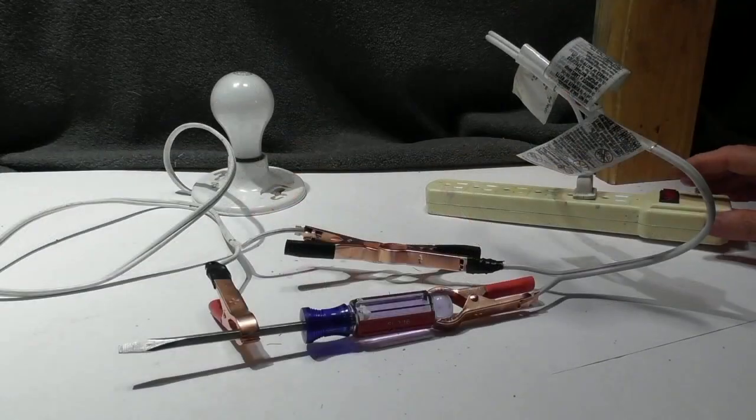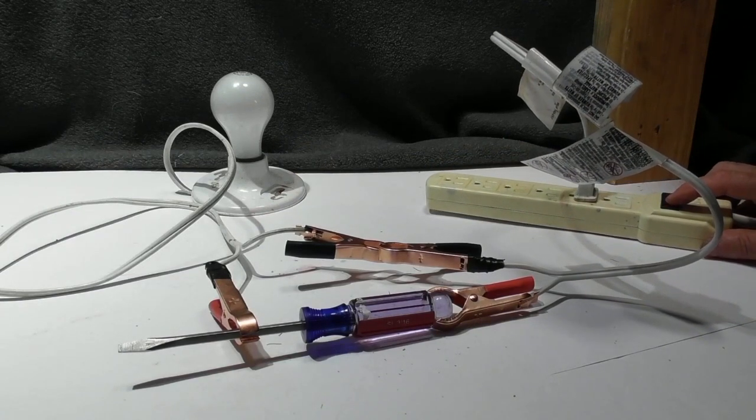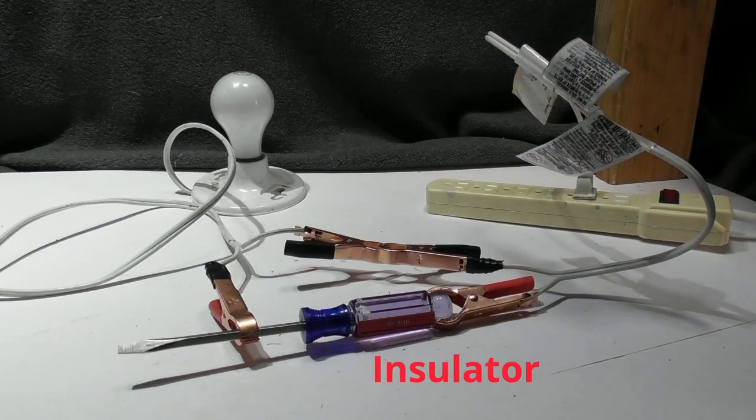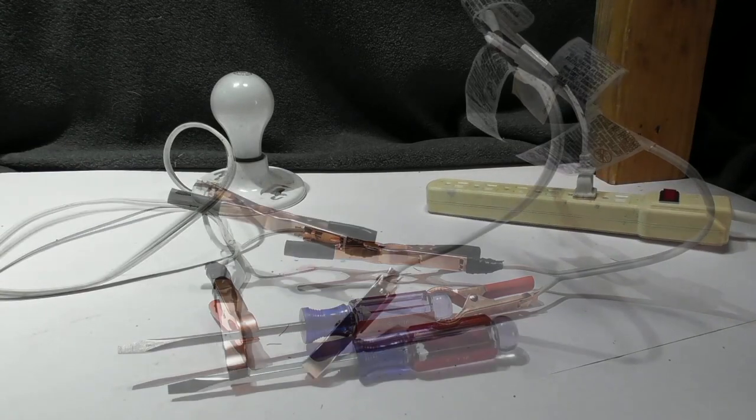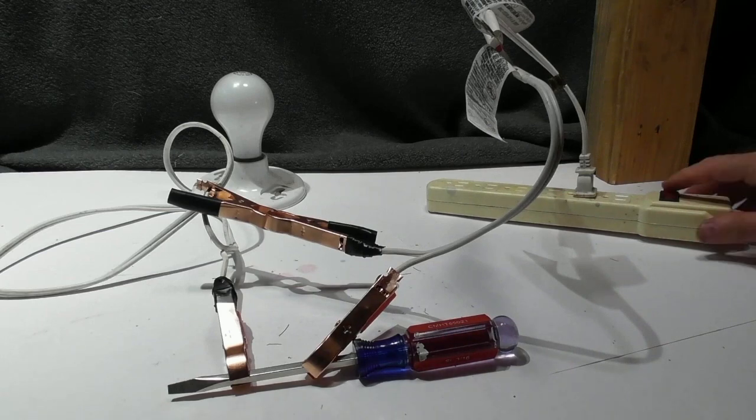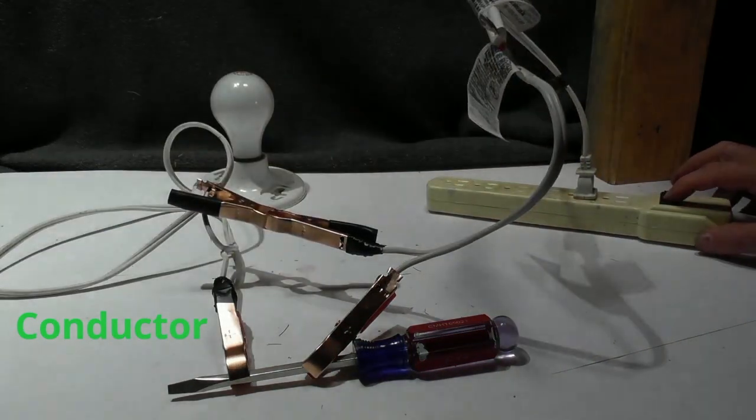Next, let's try this screwdriver. The reason why I use this, I have plastic on one end, metal on the other. I flip the switch. Nothing happens. But now, if I move it to where it is touching metal only, it's now a conductor. So the plastic helps insulate it.